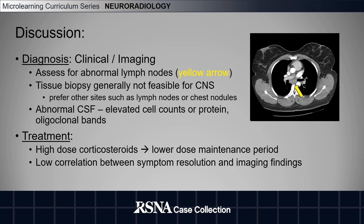However, you may have abnormal CSF results including elevated cell counts, elevated protein, and oligoclonal bands. The treatment of central nervous system sarcoidosis includes high-dose corticosteroids followed by a lower-dose maintenance period. A second-line treatment may include methotrexate. There is a low correlation between symptom resolution and imaging findings in CNS sarcoidosis.